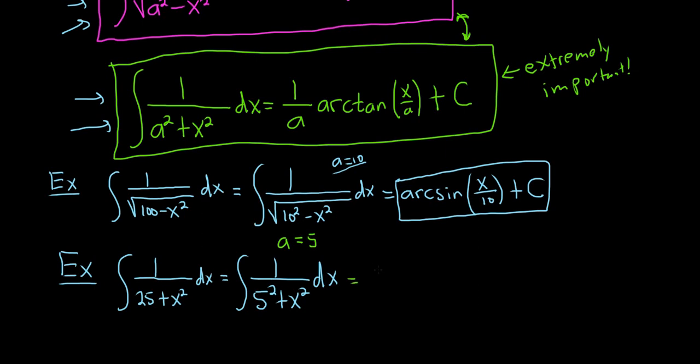So this is equal to 1 over a. Remember, the arctan has the 1 over a. That's how I memorize it. The arctan has the 1 over a. So it's 1 over 5 arctangent of x over 5. And don't forget your constant of integration, capital C. So really, really nice formula.